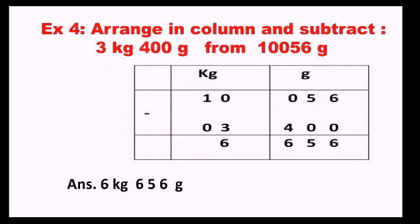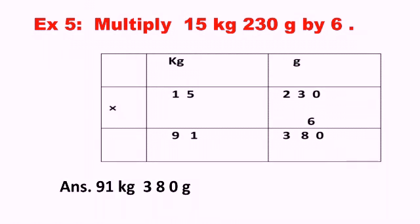Remember that under gram you can write a maximum of 3 digits. Write the final answer as 6 kg 656 gram. Now look at the fifth example: multiply 15 kg 230 gram by 6. The amount is already in converted form, so make two columns for kg and gram. Put 15 under kg and 230 under gram, then multiply by 6. The answer is 91 kg 380 gram.